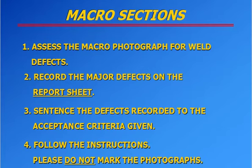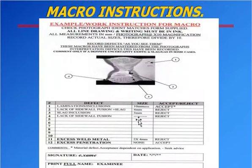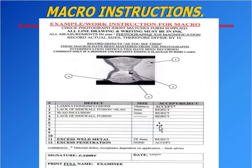This is an example work instruction for macro. They will give you this sheet and one specimen. You have to find out the defects — lamination, lack of fusion, whatever is there, and what size they are — and determine whether each is accept or reject. You put your signature and name on the report sheet. This is the specimen paper they will give to you.